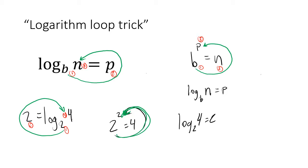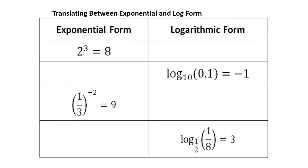Now let's apply the loop trick to some problems. I'll give you one form and you convert to another. Here we have exponential form: 2 to the 3rd power equals 8. How do we write that as a logarithm? We do the loop trick — and we get log base 2 of 8 equals 3. If we think about the things we pass by, it's 1, 2, 3 — so we write it as 1, 2, and 3.